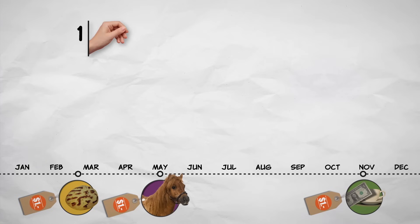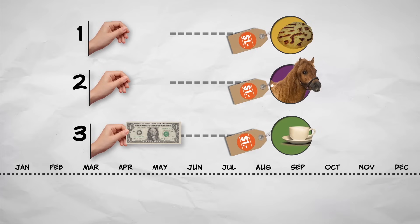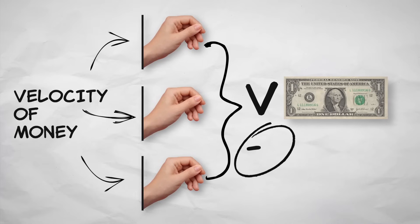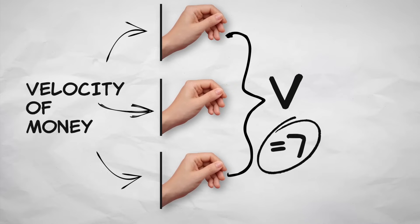What about v, the velocity of money? The velocity of money is the average number of times that a dollar is used to purchase final goods and services in a year. In the U.S. economy in recent years, v has been about seven, and it's determined by the same kinds of factors that might determine your personal v, factors like whether you're paid weekly or bi-weekly, or how long it takes to clear a check.